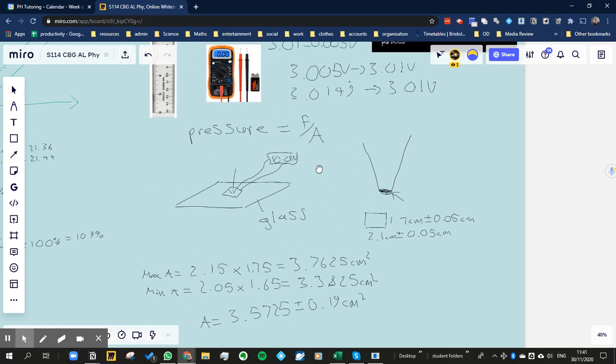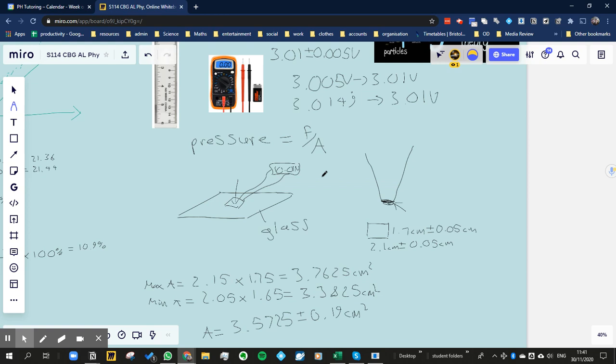Now that's the area. We still have to do the pressure, and well, we have to do the force as well actually. So the force was equal to 10.01 and it's got two decimal places, so that means we're going to be that certain about it, and that's newtons.